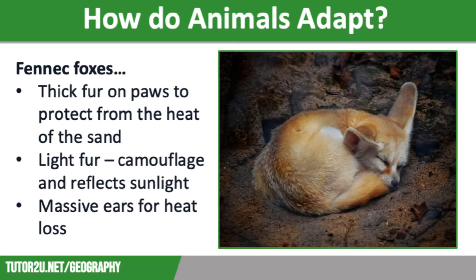Our second desert animal is the fennec fox. Fennec foxes are protected from the scorching heat of the sand by having thick fur on their paws. Their light fur offers them protection through camouflage, as well as reflecting sunlight to keep them cool. The fennec fox is easily recognisable because of its massive ears, and these massive ears allow heat loss by providing a large area of exposed skin, which is full of blood vessels.